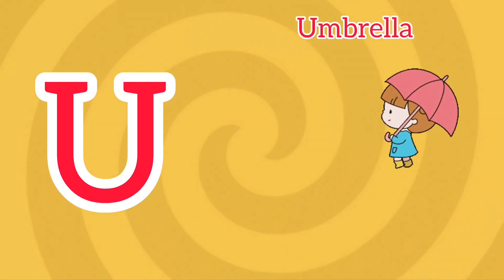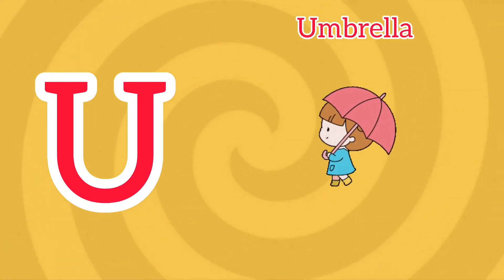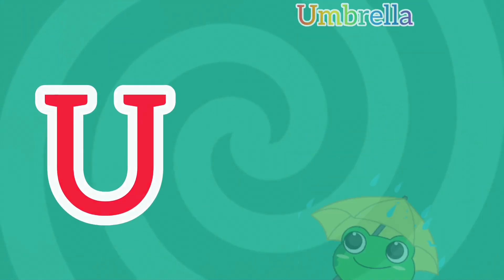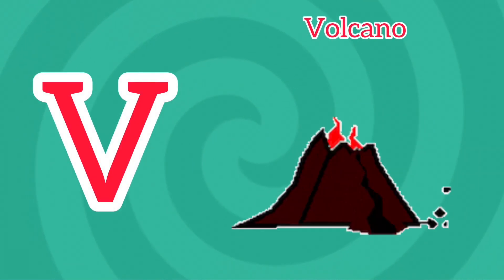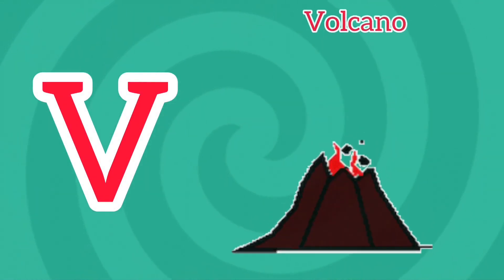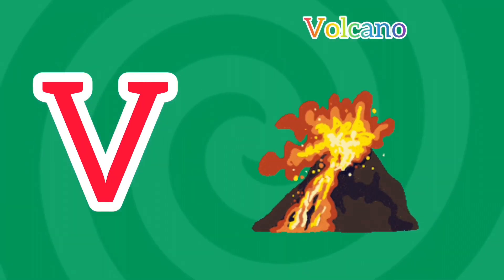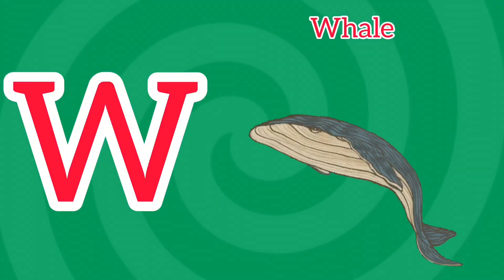U is for Umbrella. U, U, Umbrella. U is for Umbrella. U, U. V is for Volcano. V, V, Volcano. V is for Volcano. V, V.